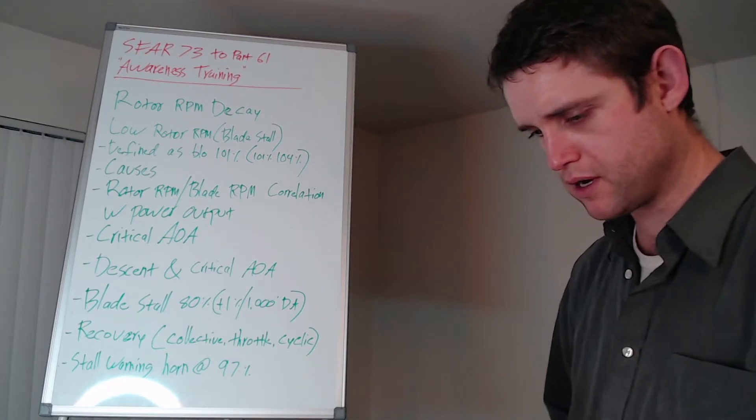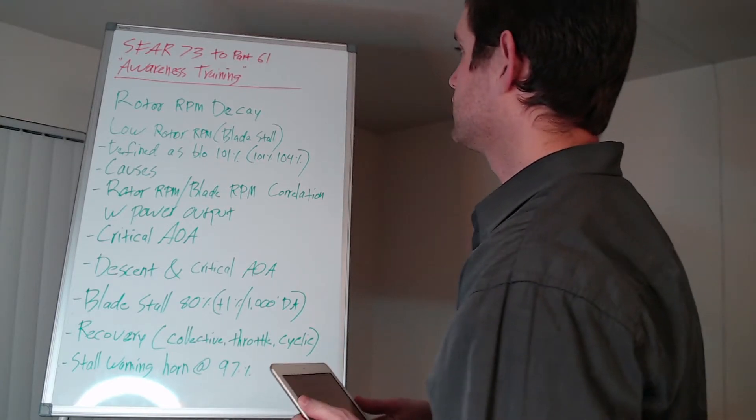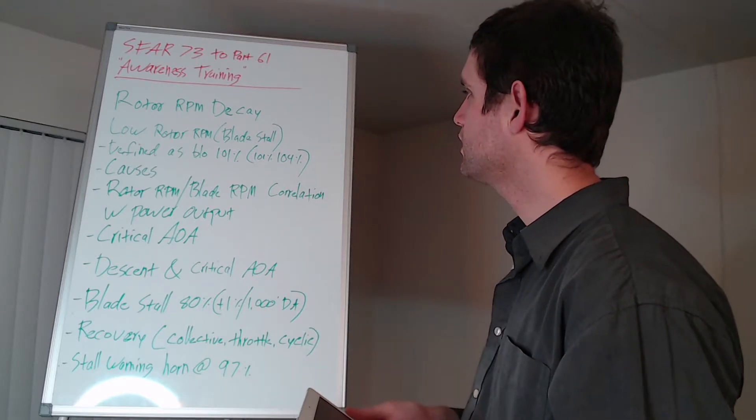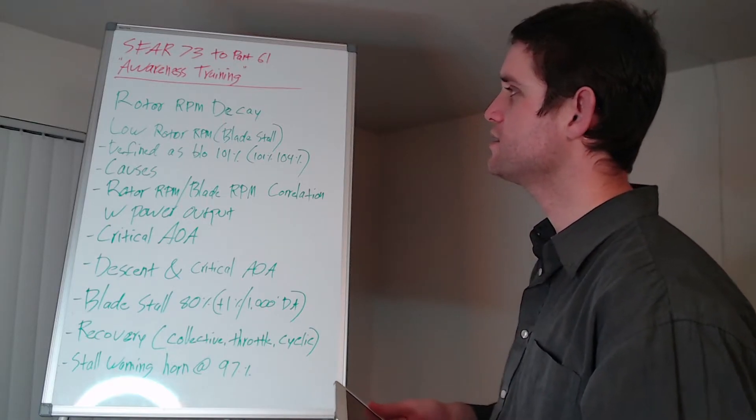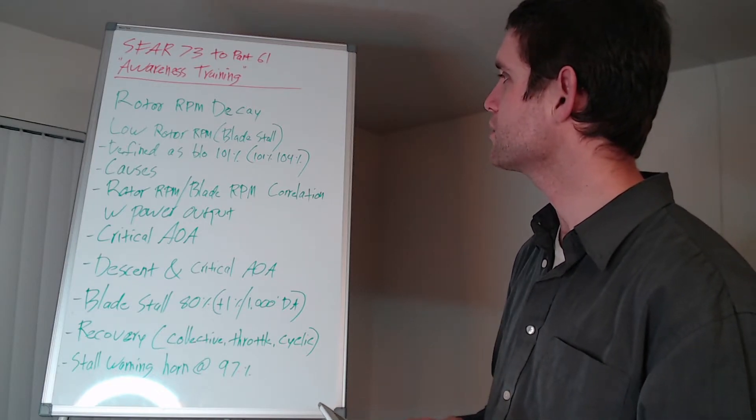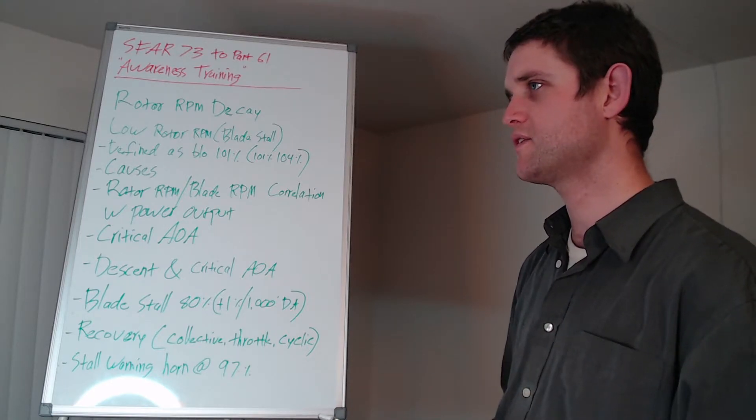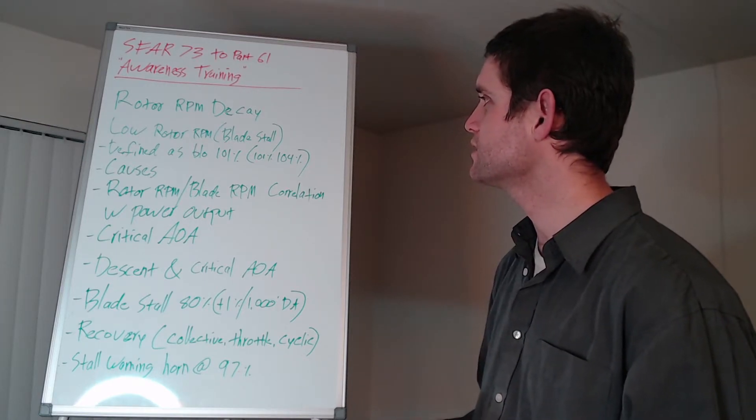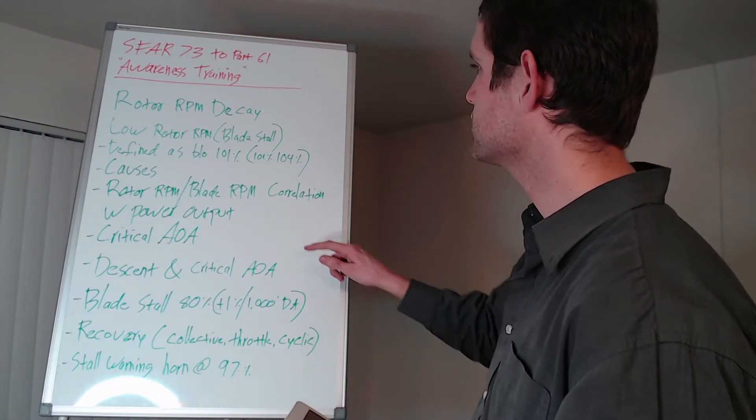Next thing we're going to talk about is rotor RPM decay, low rotor RPM, and blade stall. Your typical operating range for rotor RPM on the Robinson helicopters is 101-104%, that's the normal range. Anything below 101% is considered low rotor RPM. The few causes for the low rotor RPM is raising the collective and trying to use more power than the engine can provide. The only way for that to end is to increase dragging the rotor blades and pull the rotor RPM down as you increase the collective.